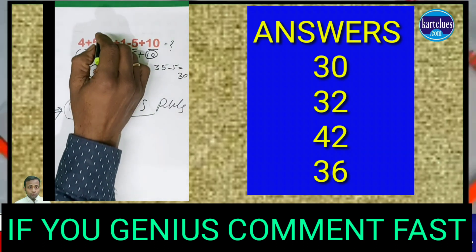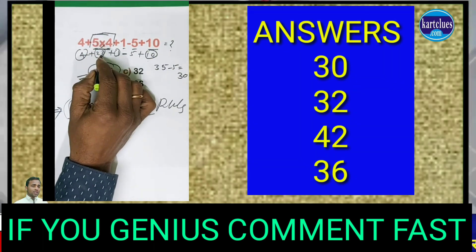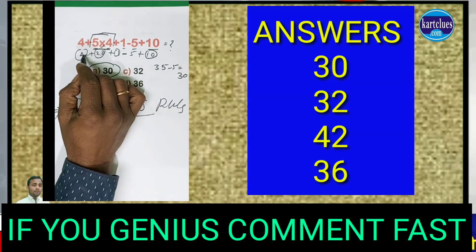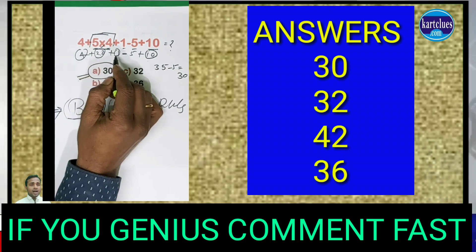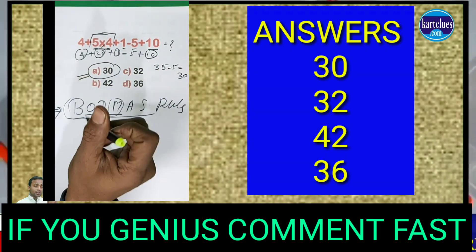See, first here multiplication is available. Multiplication means 5×4 will come to 20. And after that you write down: 4+20+1-5+10 as usual what you have written in the equation.